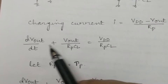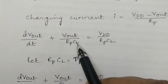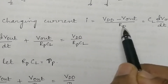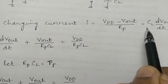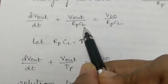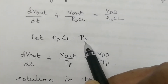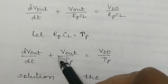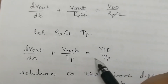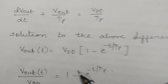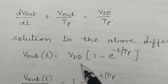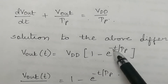Rearranging terms: dVout/dt + Vout/(RP·CL) = VDD/(RP·CL). For simplicity, RP·CL is denoted by τP, so dVout/dt + Vout/τP = VDD/τP. This is a differential equation and its solution is: Vout(t) = VDD · (1 − e^(−t/τP)).